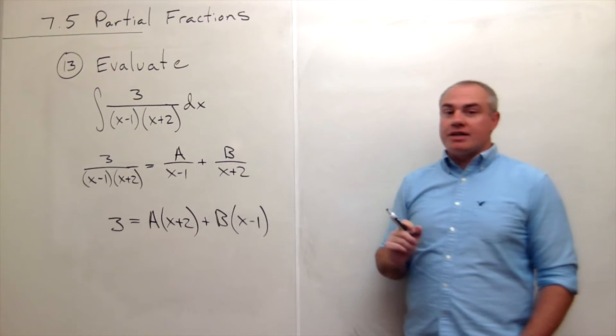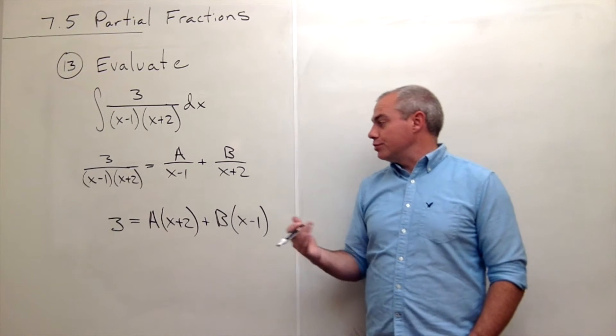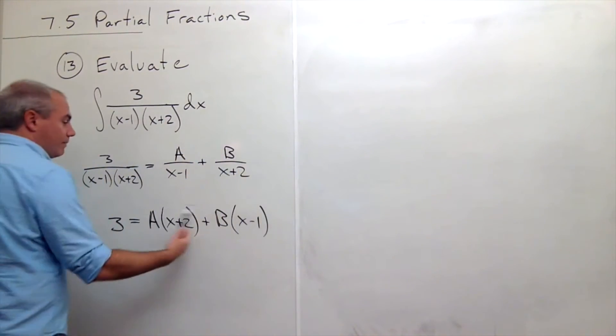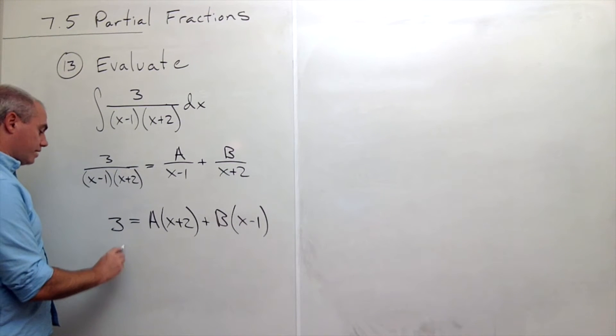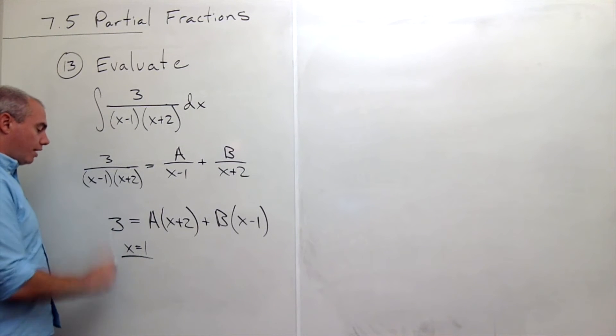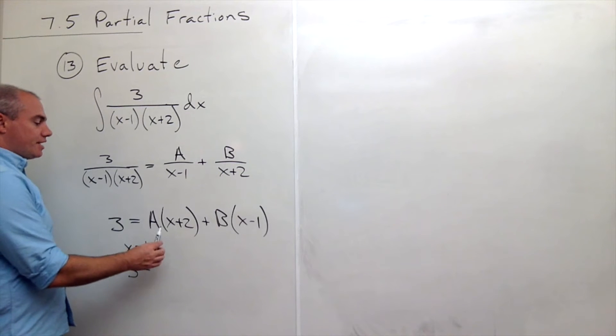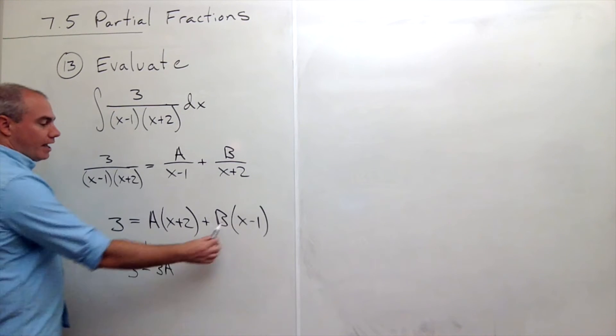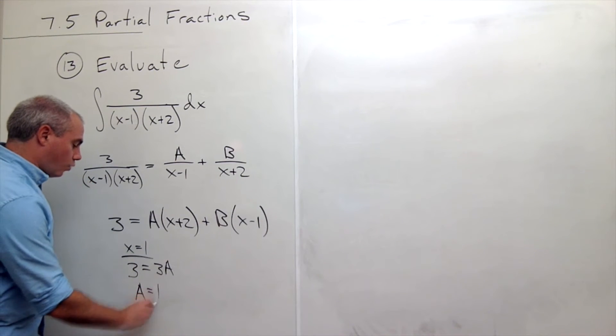Now we're ready to solve for A and B. The way I'm going to do it is by choosing good values of x, and by good values I mean values that make things 0. In this case, maybe I'll choose x equals 1. If x equals 1, well the left side is 3, and on this side I get 3A, and this term is 0. So I just get that A is 1.